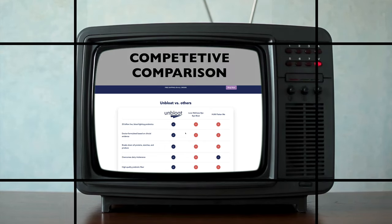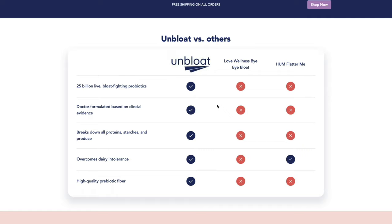The next section is the competitive comparison section. The goal is to show your potential customer why your product is the best option, especially compared to others offering similar products. You want to demonstrate why you're the best in every category, but not in a way that looks like you're exaggerating — so make sure the competition also has a few check boxes checked. Here's an example on unbloat.me that shows all the different benefits and comparisons by brand.